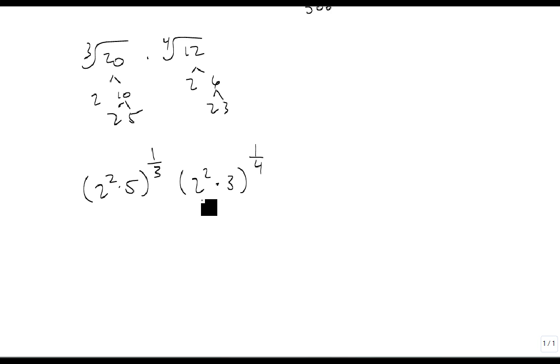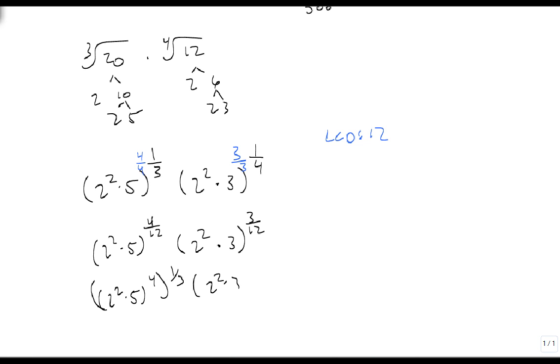So now we want the LCD between 3 and 4 and that's 12. So we're going to do 4 fourths and 3 thirds. That gives me 2 squared times 5 to the 4 twelfth. 2 squared times 3 to the 3 twelfths is 2 squared times 5 to the 4th, 2 squared times 3 to the 3rd, to the 12th.